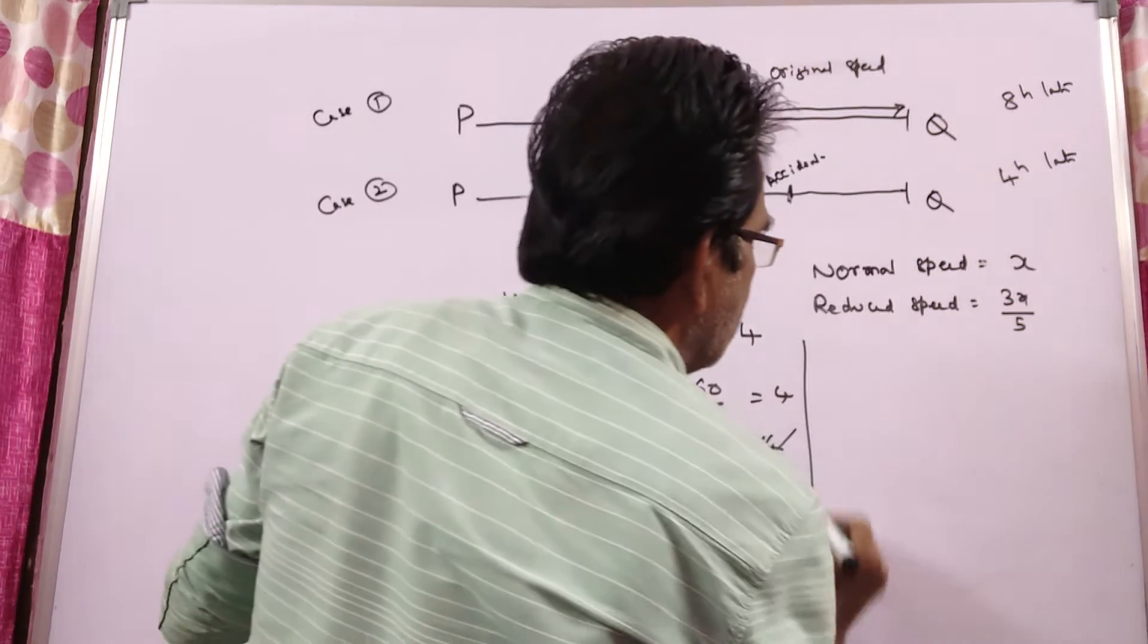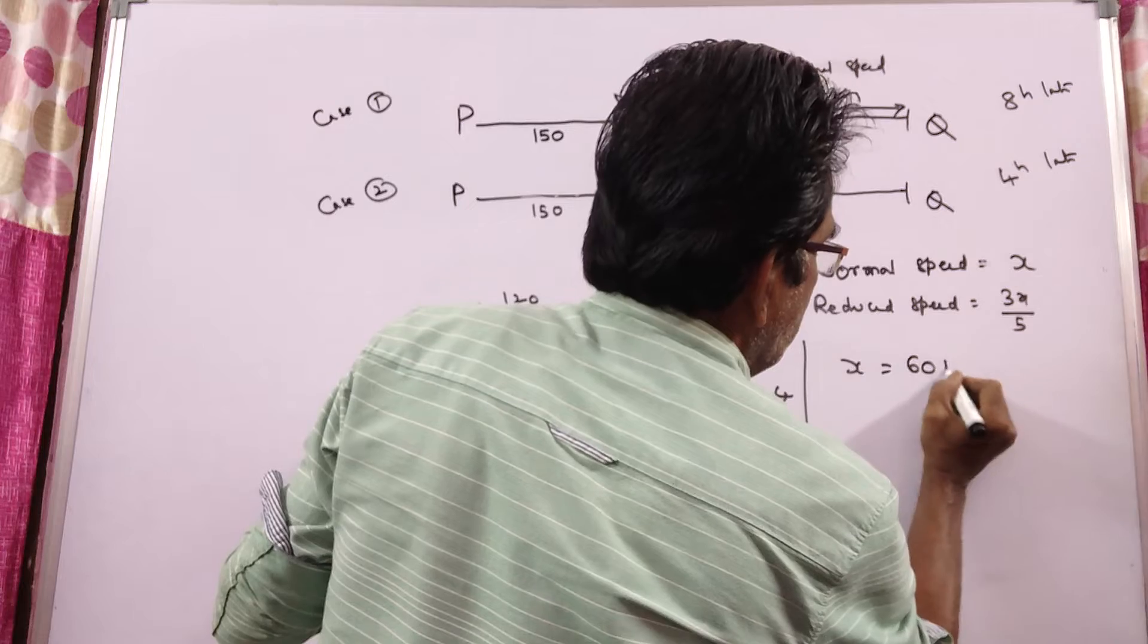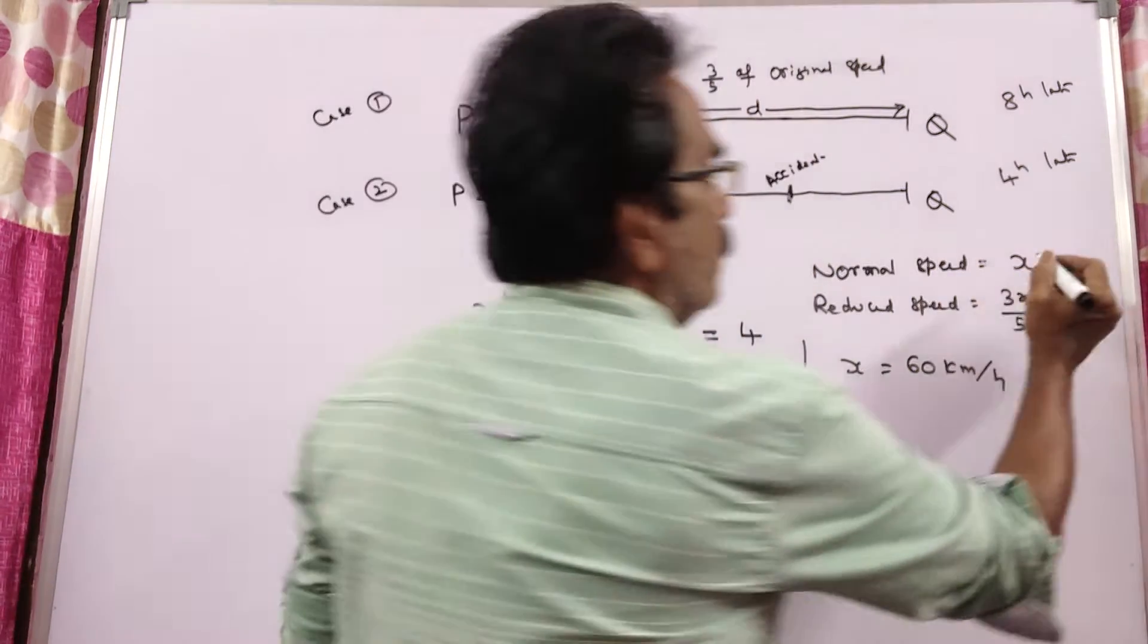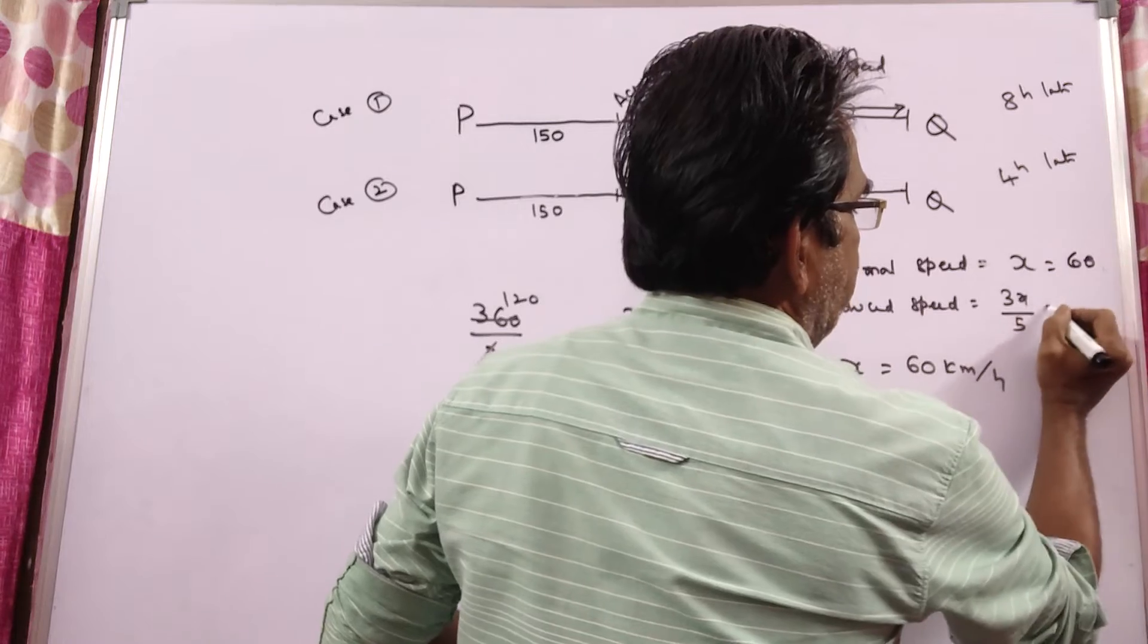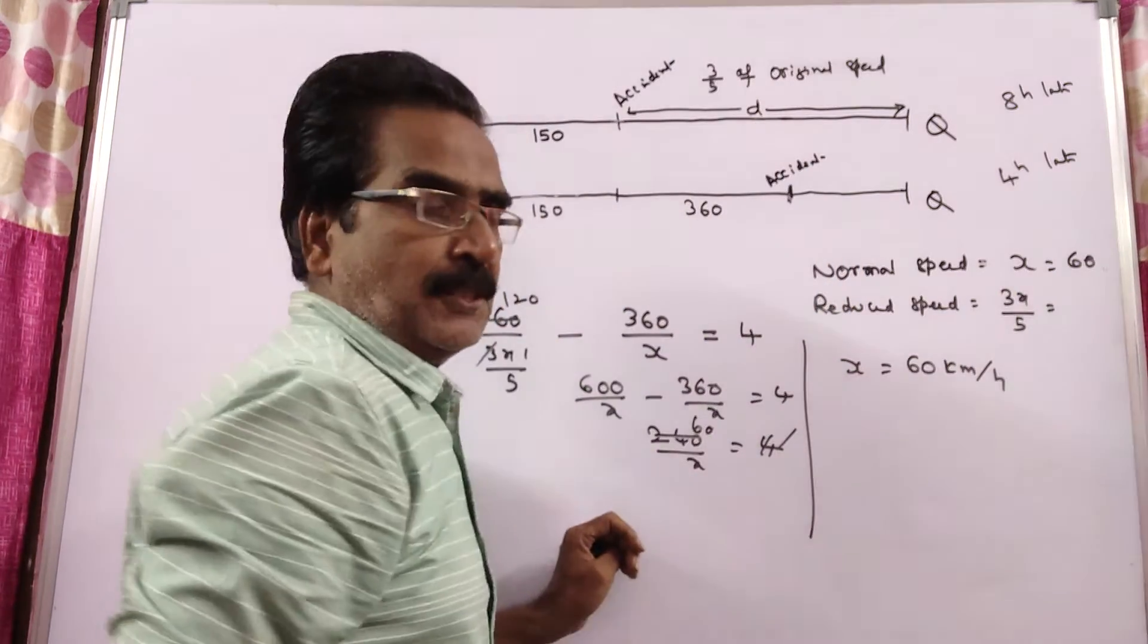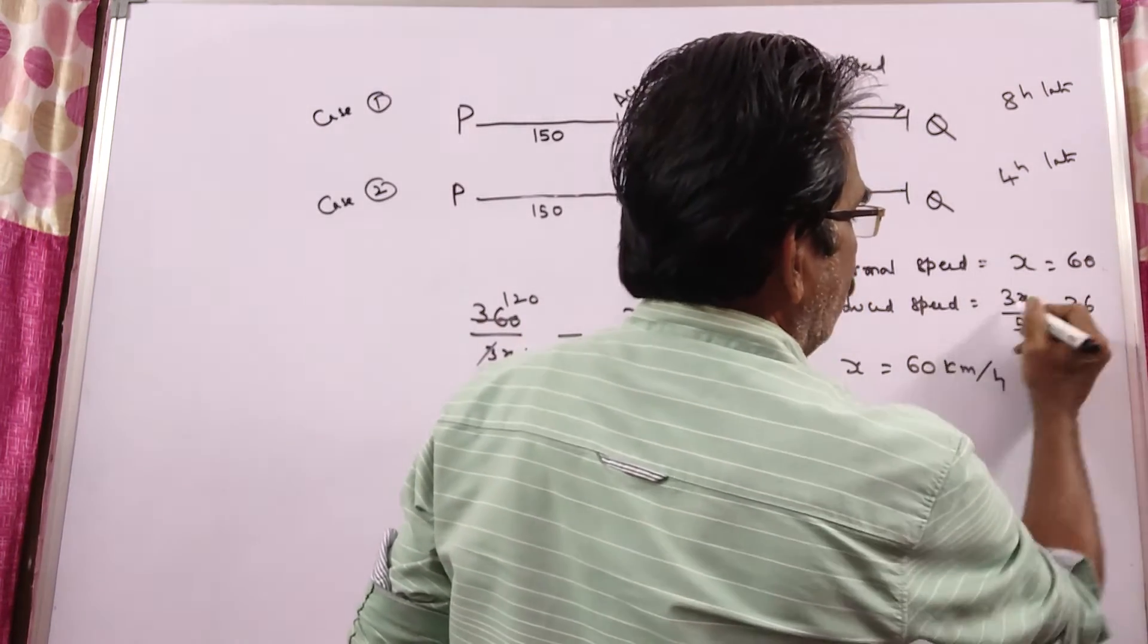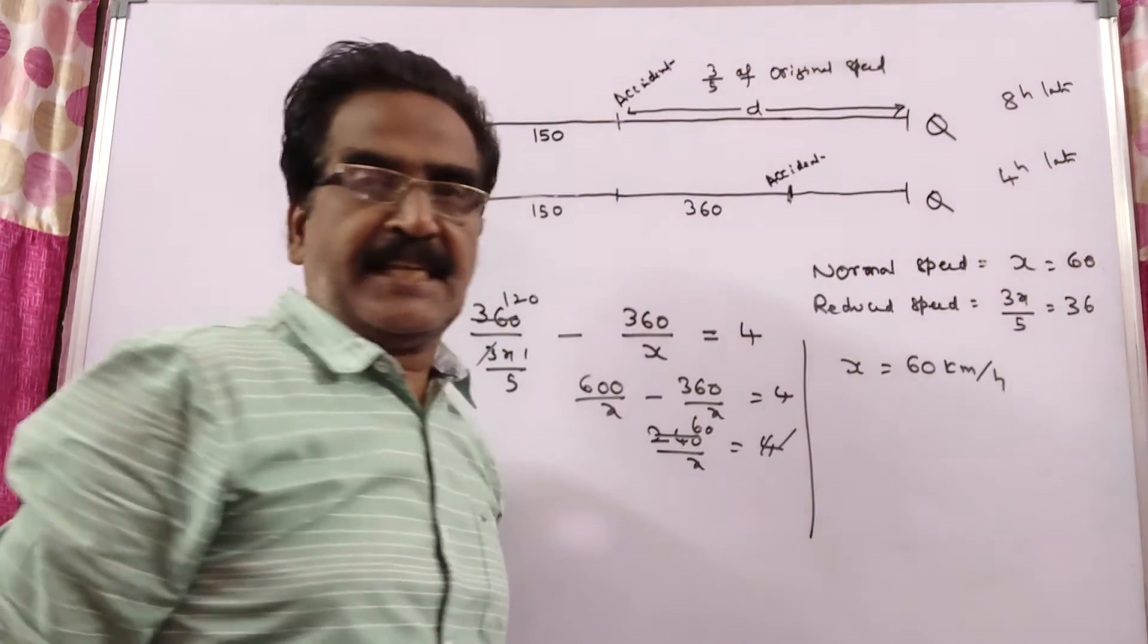4 into 60, x is equal to 60 kmph. Friends, x is equal to 60 kmph, this is normal speed. So, normal speed is 60 kmph and reduced speed is 3 by 5 into 60, 36 kmph.